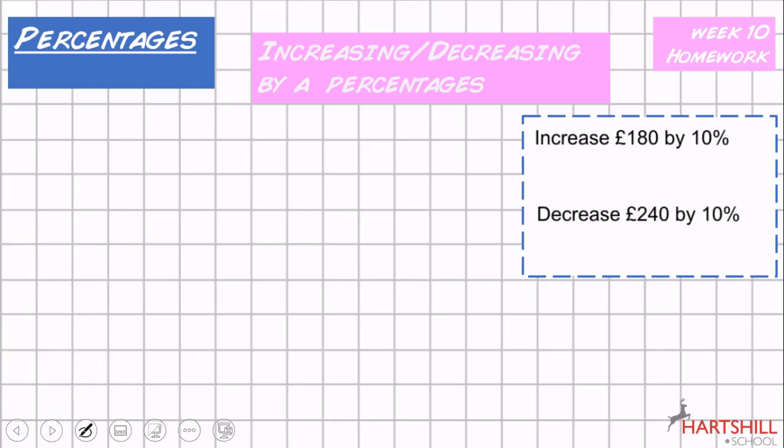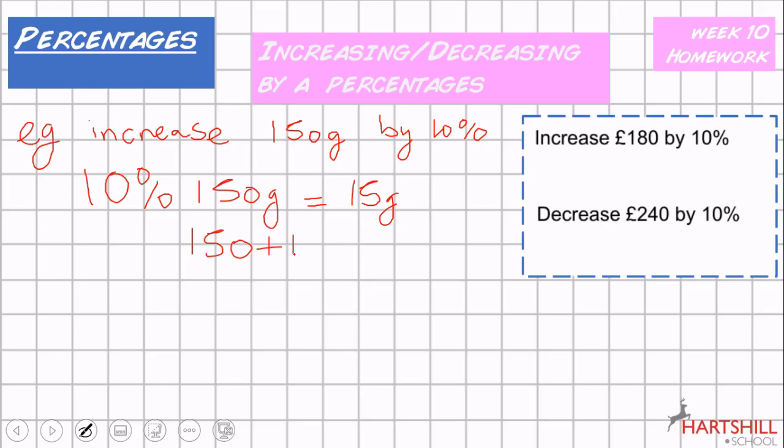So these are the questions that are on your Maths Watch homework. So again, I'm going to do an example, which is similar to the actual question. Now, let's say we have to increase 150, let's say, grams by 10%. Well, 10% of 150 grams is 15 grams, and then all we need to do is add it on. So it'll be 150 plus 15, which will give us 165 grams.